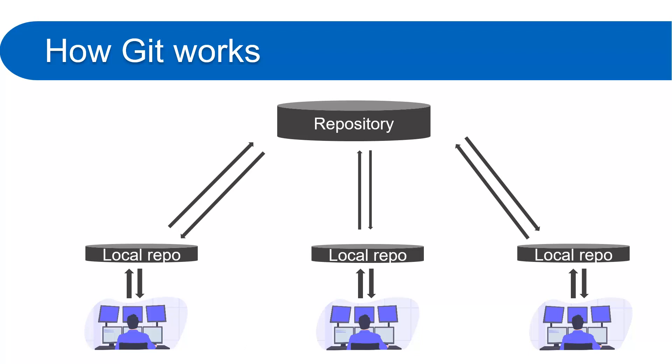The disconnected nature means you do not have to depend on the main repository — you can work independently on the local repo without an internet connection. You can switch branches in the local repo and make all changes locally. When you want to sync, you pull the latest code from the main repo to your local repo or push your local changes to the main repo. All these operations work in a disconnected manner.